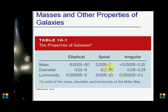The luminosity of spiral galaxies is higher than elliptical and irregular galaxies, because spirals have dust, and this dust causes them to be more luminous.